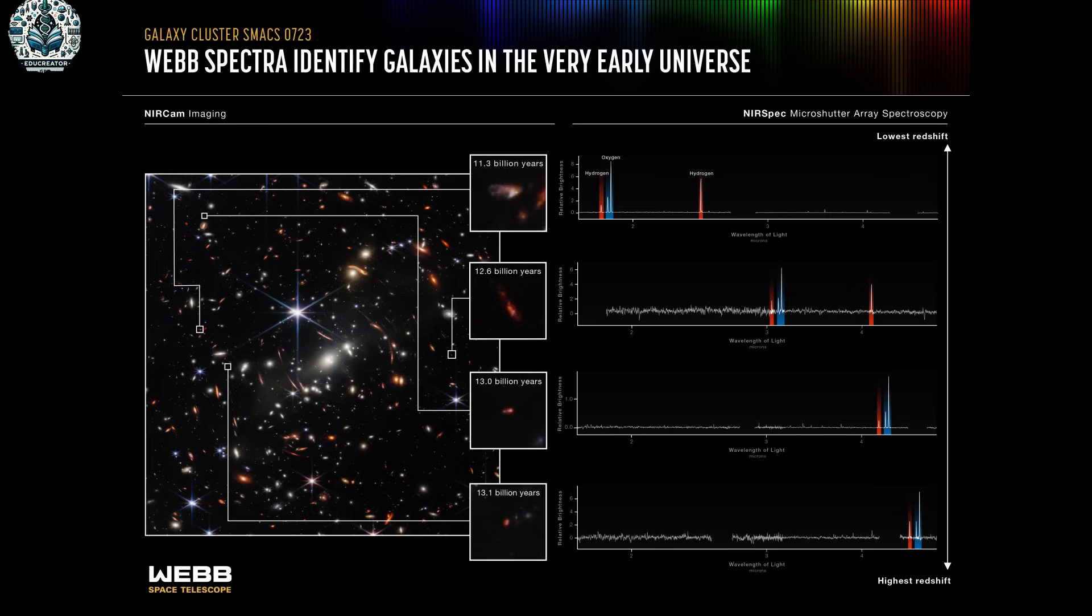And there is also computer modeling. This is where scientists use computers to predict how different kinds of light interact with stuff in space. It helps them create more accurate and detailed images. All these methods are about making invisible light visible and understandable to us. While these images aren't exactly what we'd see with our eyes, they show us incredible things hidden in the universe.